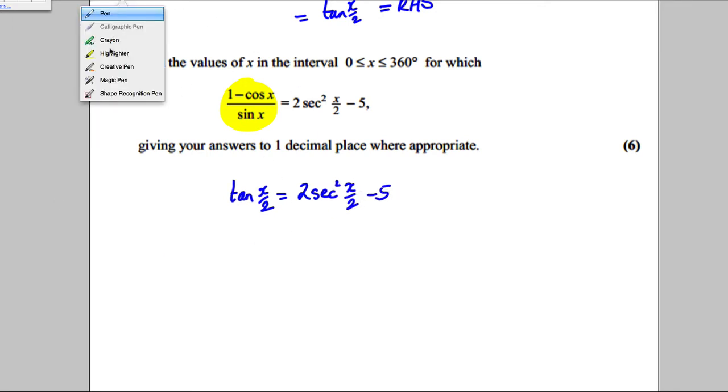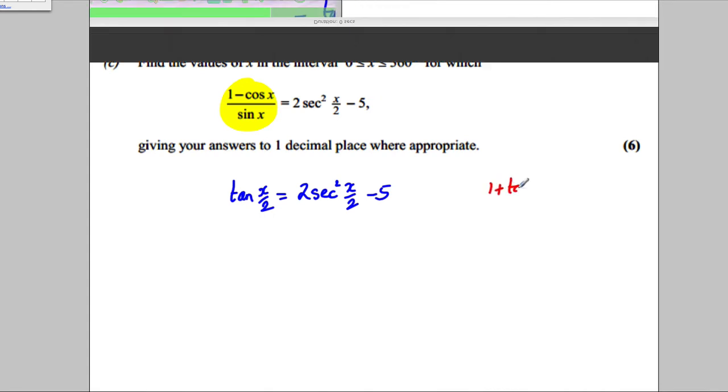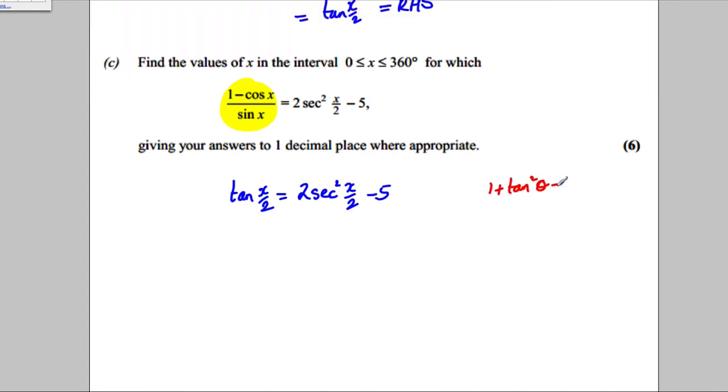Now, I can only solve this if everything's in terms of sec or tan. And I should know the formula, one of the identities I need, namely that 1 plus tan squared theta is equal to sec squared theta. So what I could do is I could replace this here with 1 plus tan squared. So I'm going to have tan of X over 2 would be equal to 2. And if theta was X over 2, I would have 1 plus tan squared X over 2. Like that, take away 5.